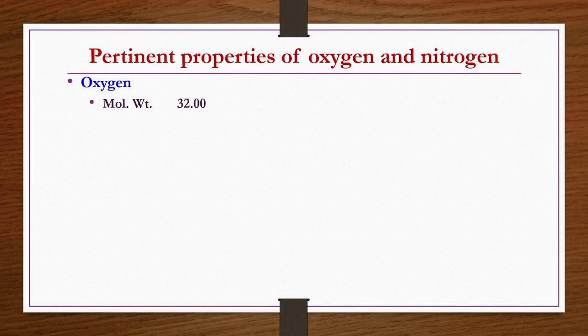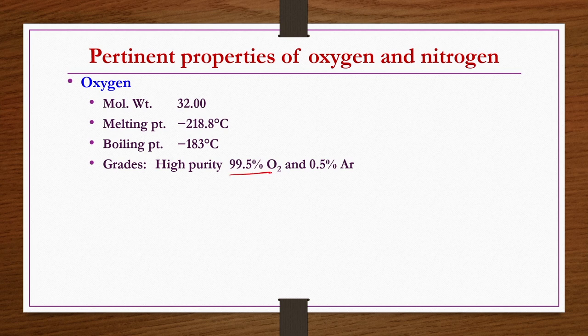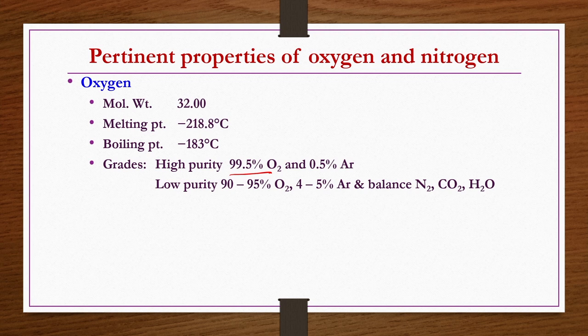Let us see the properties of oxygen and nitrogen. Oxygen has a molecular weight of 32, melting point of minus 218.8 degrees centigrade, and boiling point of minus 183 degrees centigrade. For grades: high purity oxygen should be 99.5 percent or more pure with the remainder balanced by argon. Low purity oxygen has a purity of 90 to 95 percent with 4 to 5 percent argon and the balance being N2, CO2 and H2O.